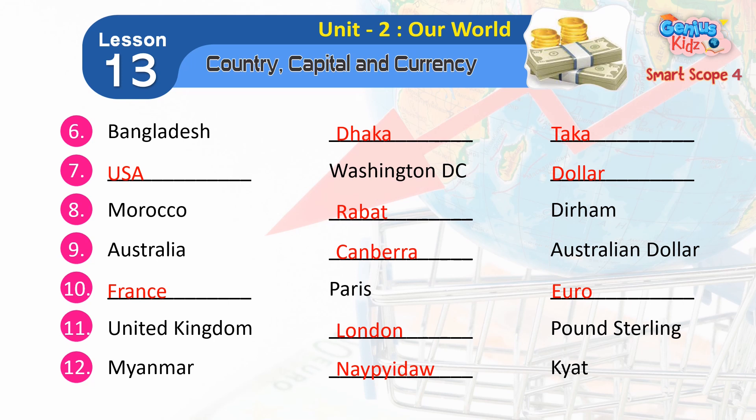7. USA — Washington D.C. — Dollar. 8. Morocco — Rabat — Dirham.